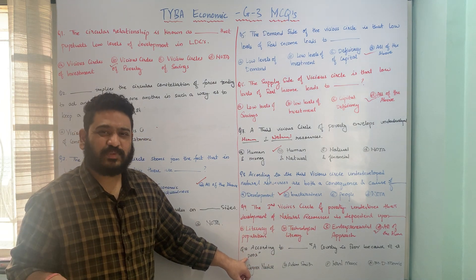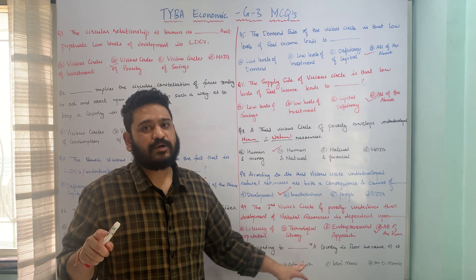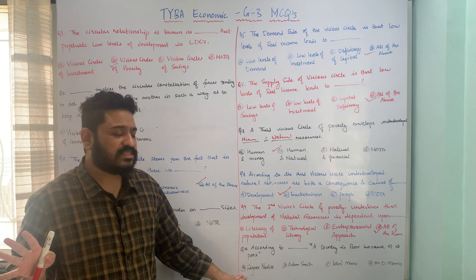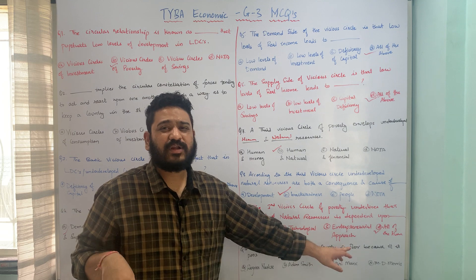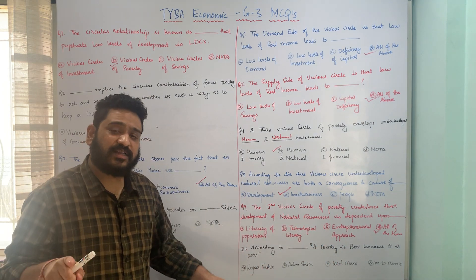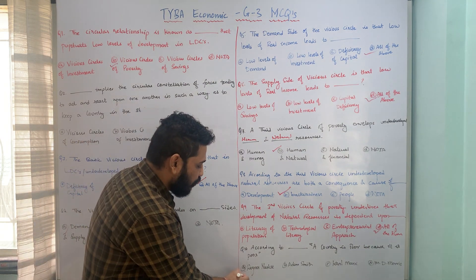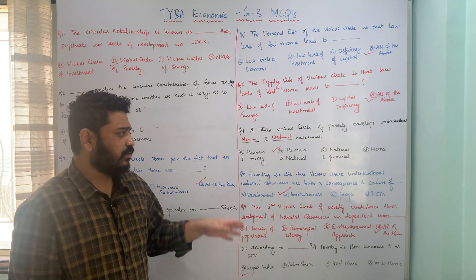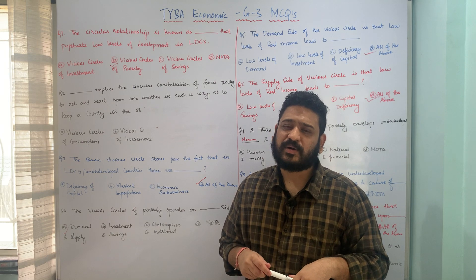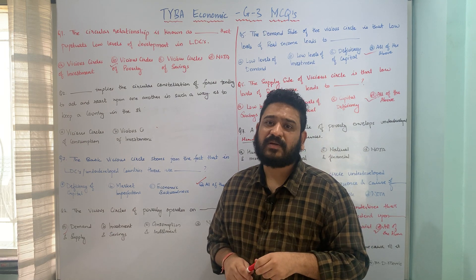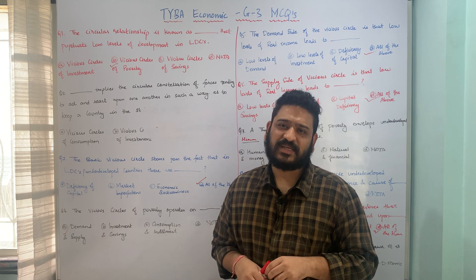The last question in this segment: according to dash, a country is poor because it is poor. Options: A — Ragnar Nurkse; B — Adam Smith; C — Karl Marx; D — M.D. Morris. The statement 'a country is poor because it is poor' was made by Ragnar Nurkse, so option A is the correct answer. I hope the questions are clear with respect to the vicious circles of poverty. In the next class, I'll cover more important MCQs from the same chapter. Please stay tuned. Thank you.